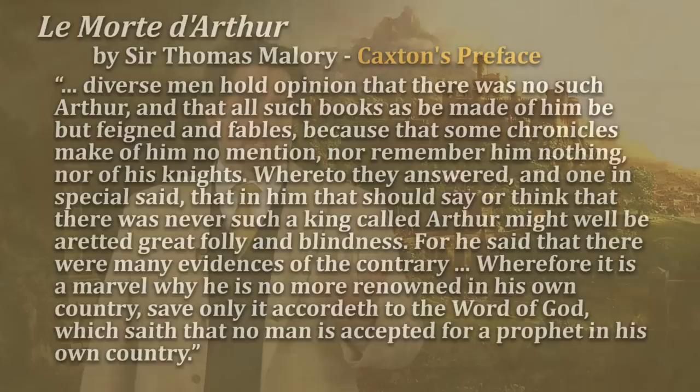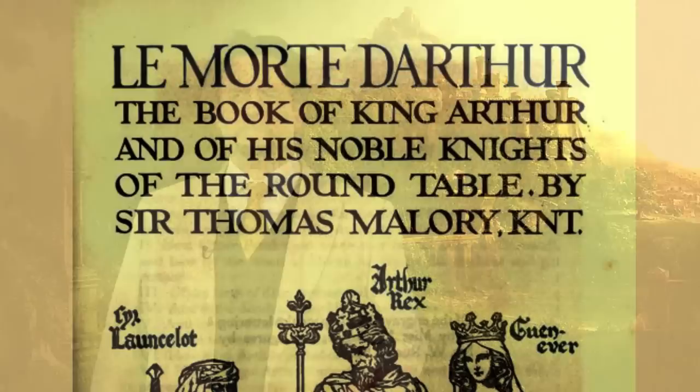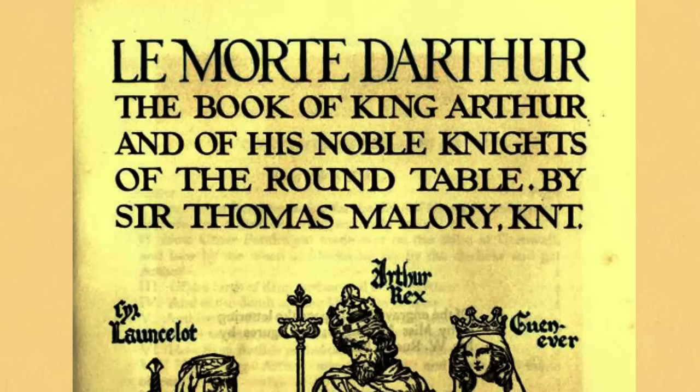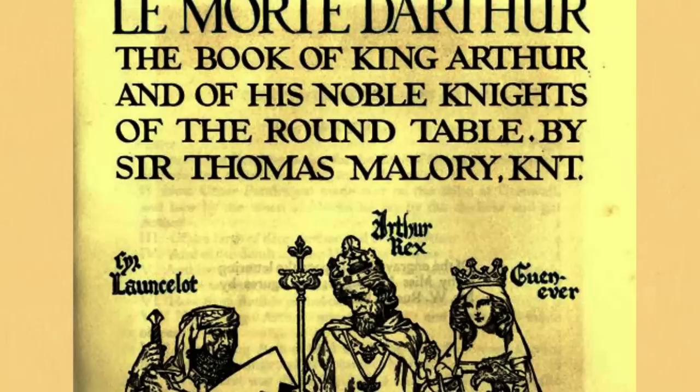Caxton goes on in the preface to talk about this as a history — a history of King Arthur. And that was pretty common. Most of the written forms of the Arthurian story talk about the history of Arthur, the history of the kings of England, or the history of the Grail, or the history of the fall of Camelot and the death of Arthur. So Malory is writing a history in the sense that the medievals saw history.